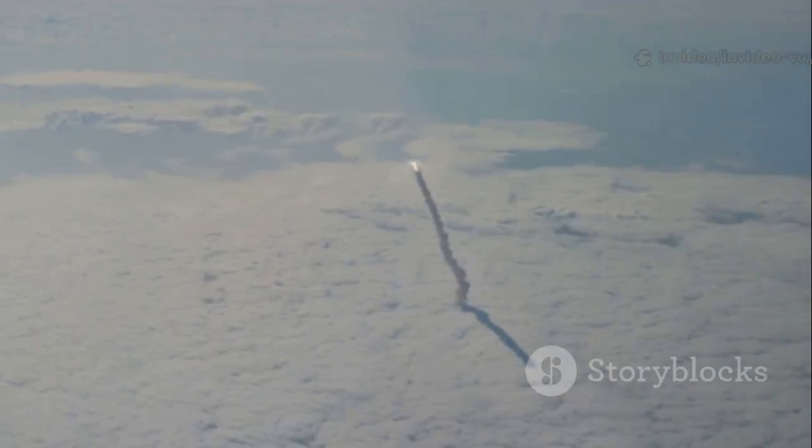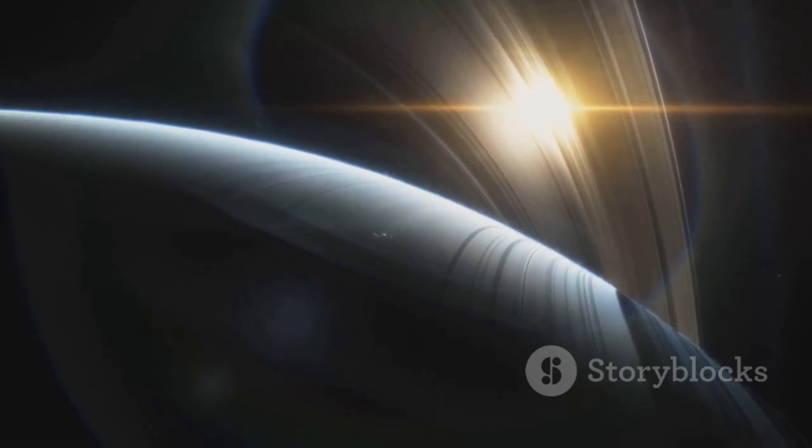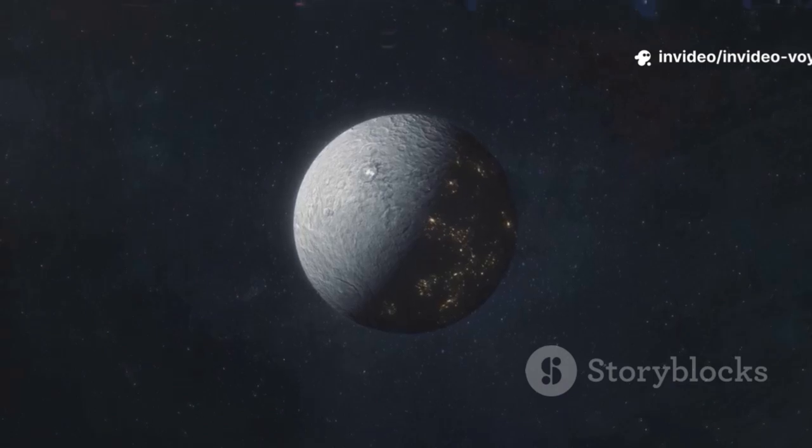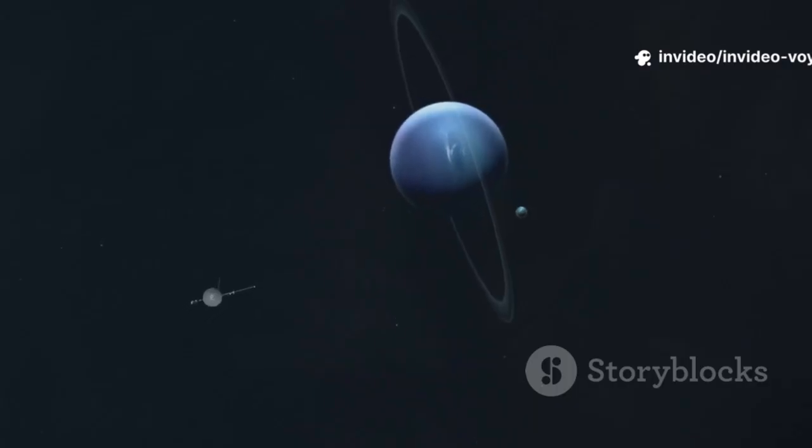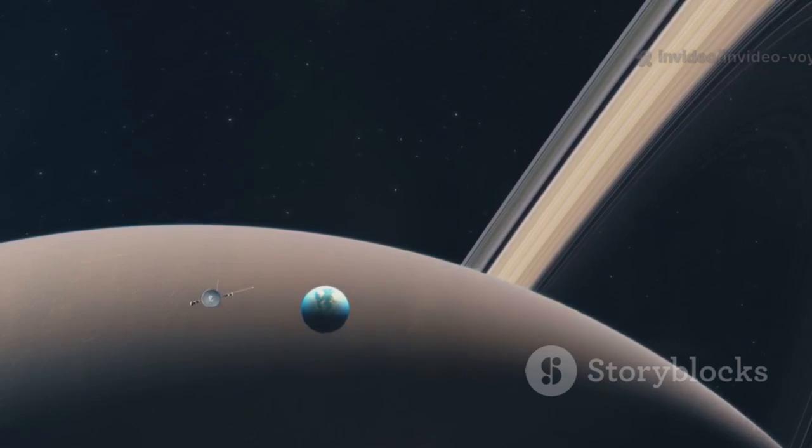Launched long ago in 1977, it was sent on a grand tour of our solar system's outer giants: Jupiter, Saturn, Uranus, Neptune. It showed us worlds we had only dreamed of, sending back pictures that rewrote our textbooks and fired our imaginations. It was a triumph of human ingenuity.